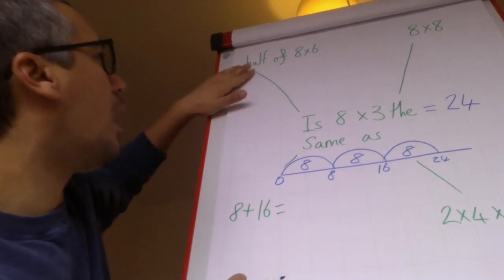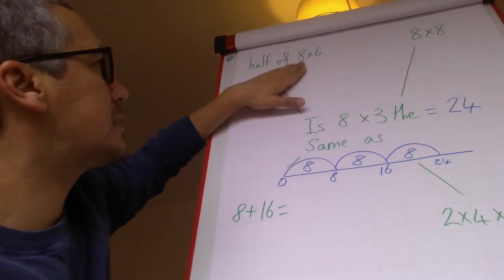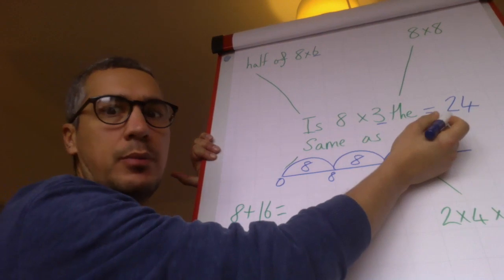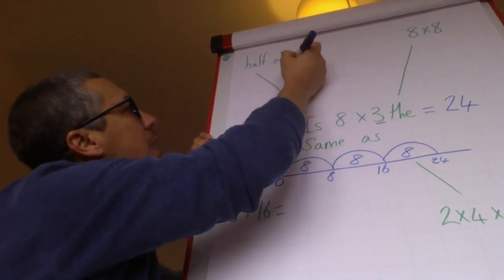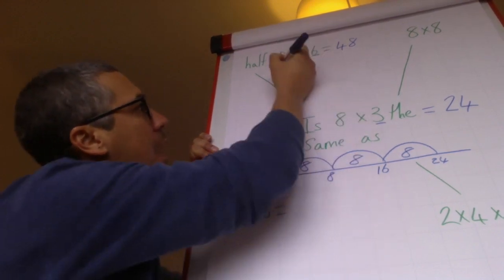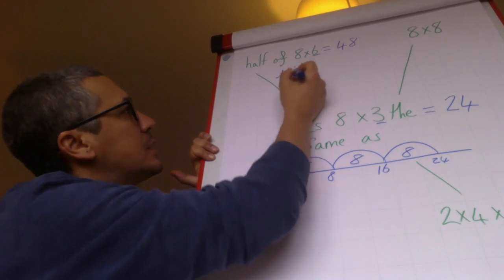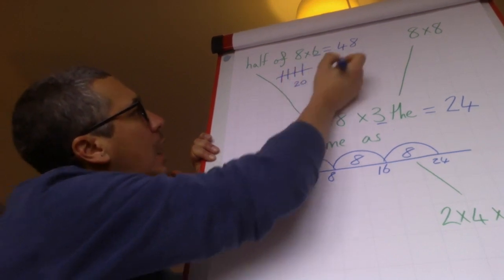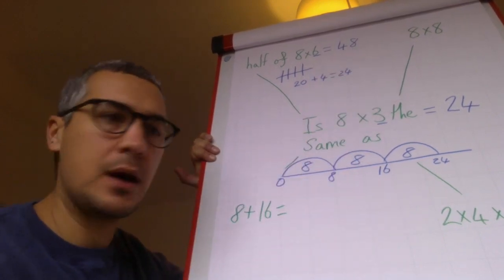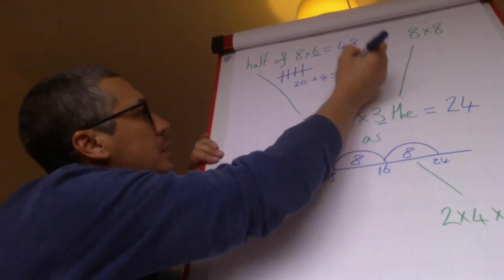So the question is asking me is half of eight times six the same as eight times three. So we know eight times three is 24. Now eight times six, if I'm looking at it, six and three have a relationship: double three is six, so I should just be able to double my answer to find out that. But eight times six, I know that eight times six equals 48. Half of 48, now if I want to find out half of 48 I can do it one of two ways. I can do 10, 20, 30, 40 and cut that in half. So half of 10 is 5, so half of 40 is 5, 10, 15, 20. Half of 8 I can do that one in my head, half of 8 is 4. 20 add 4 equals 24. So I know straight away is 8 times 3 the same as half of 8 times 6? Yes, because that equals 24.